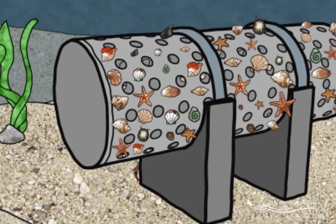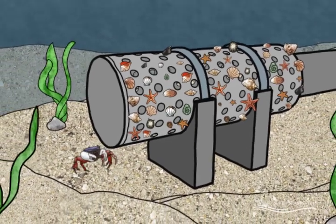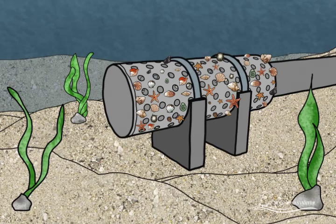In a properly designed brine outfall, no noticeable increase in salinity can be detected at a distance of a few meters from the discharge.